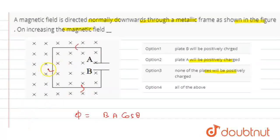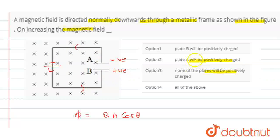You can think of the induced EMF like a battery with a certain polarity. If current flows in a particular direction, the effective battery has a positive terminal on one side. The positive voltage corresponds to plate A — so plate A will be at positive potential and plate B at negative potential. Therefore, plate B will be positively charged — that is option 1.